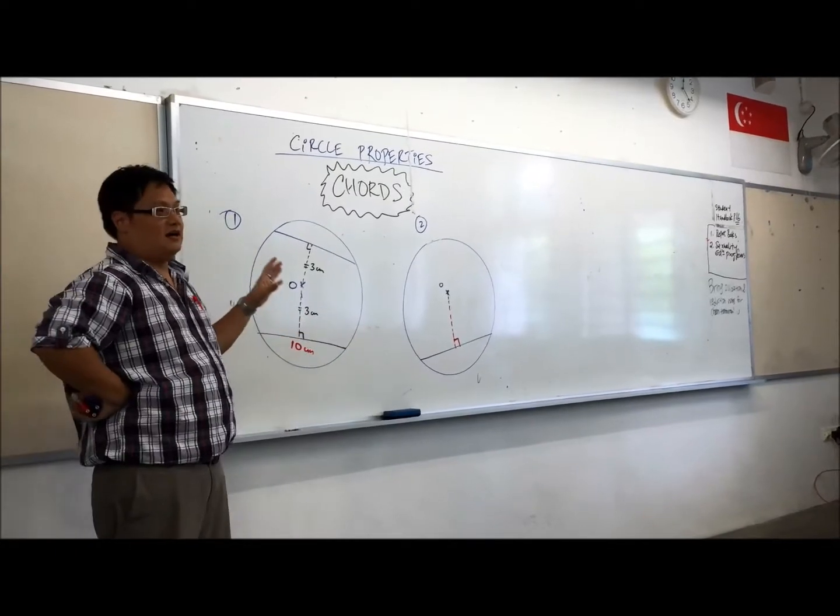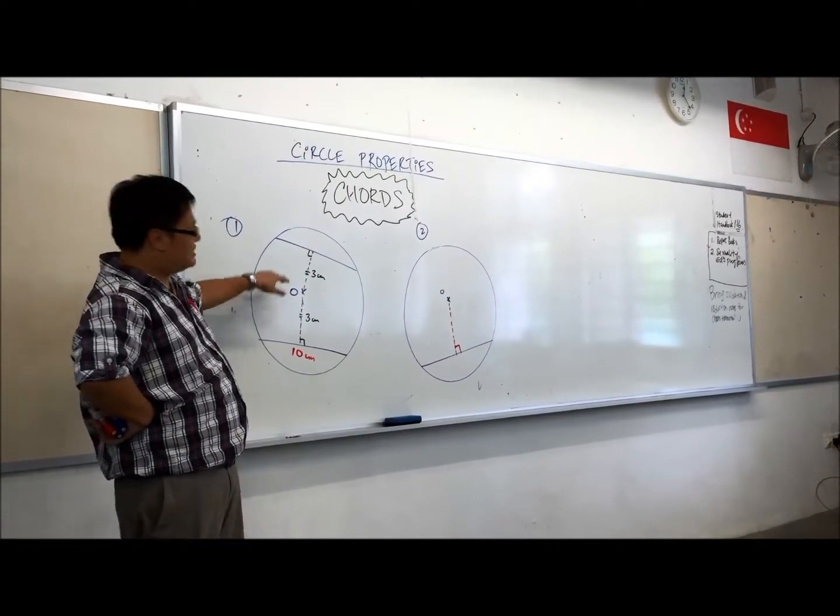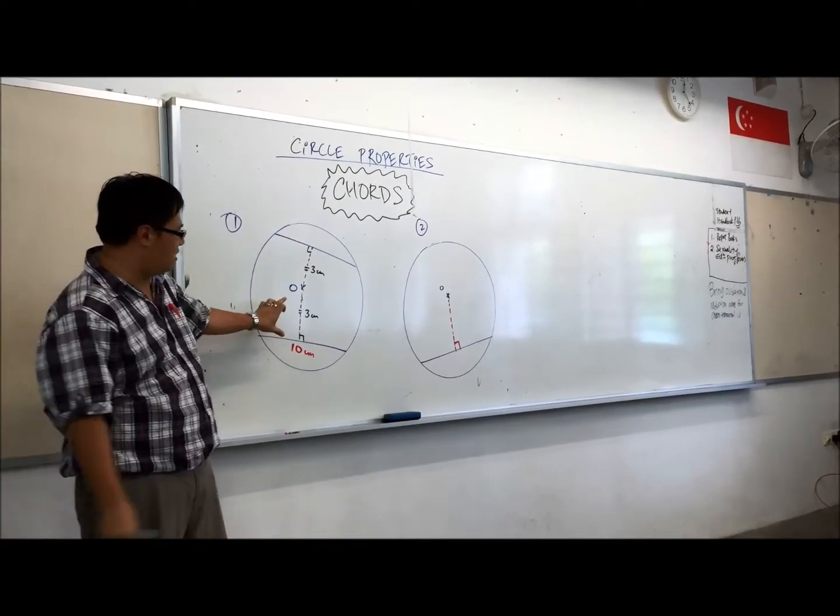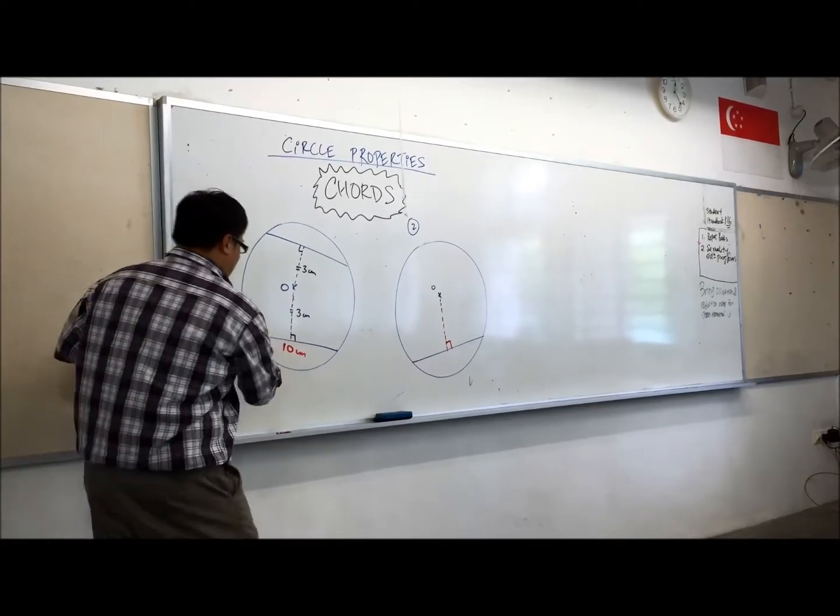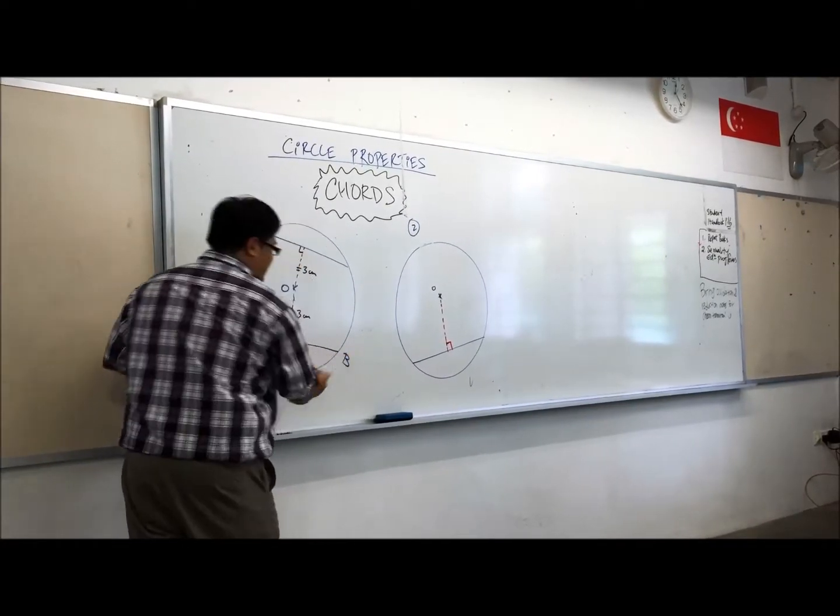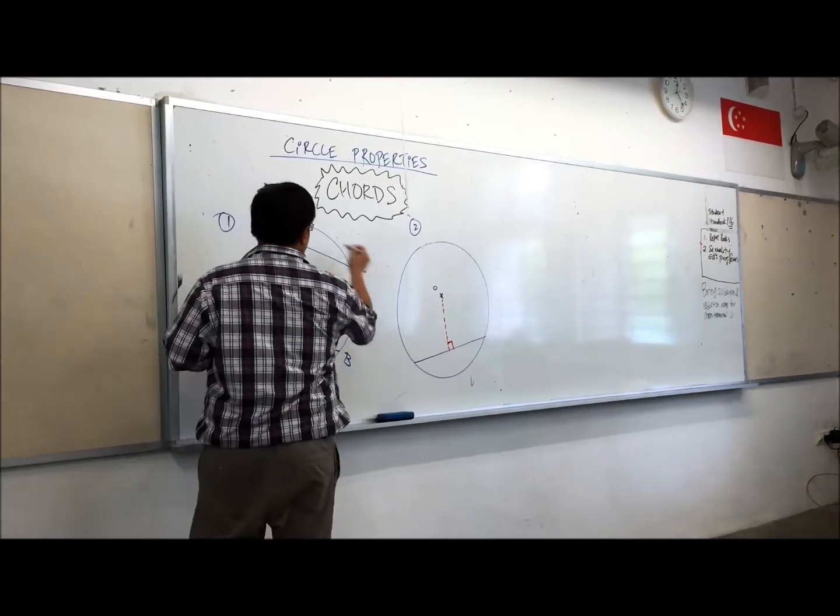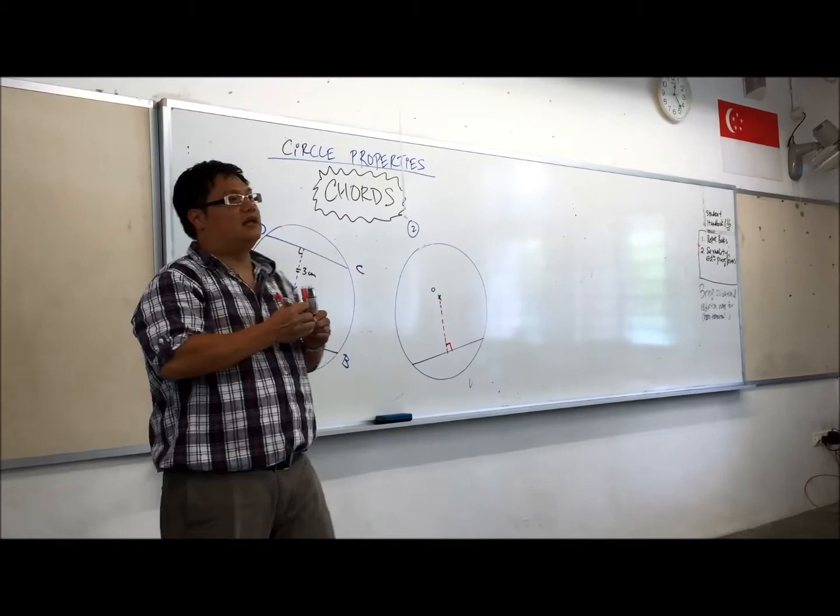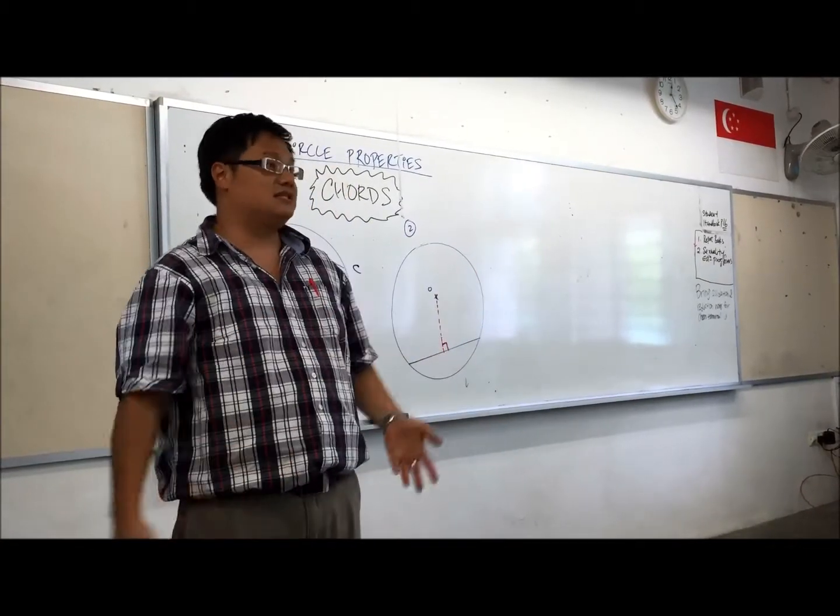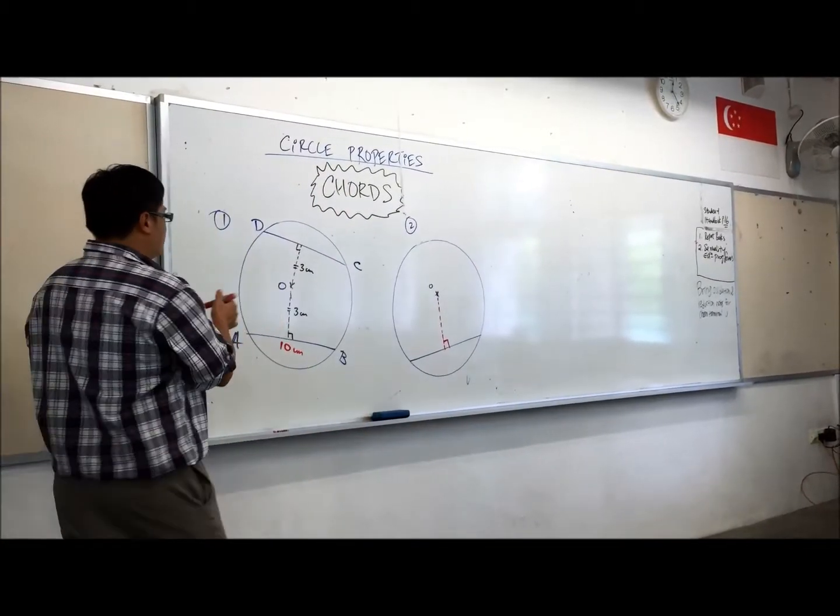When two chords are of the same distance from the center hole, in this distance, three centimeters from center hole, three centimeters from center hole, and in this chord, AB is 10 cm long. If this chord is 10 cm long, what can we say about the length of CD? It's 10 cm. It definitely is 10 cm. That's what we call equal chords.